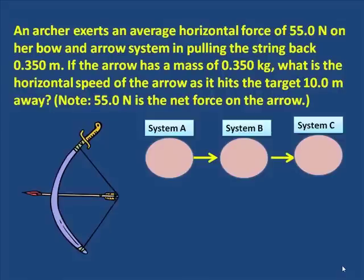The arrow becomes system C. It gains energy and goes off at a high speed at a great distance.